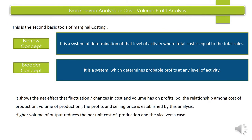Start करते हैं break-even analysis और cost volume profit analysis से। यह दोनों terms interchangeably use की जाती हैं। Break-even analysis और CVP analysis जो है वो second basic tool है marginal costing का — first basic tool हमने Part 1 में किया था, that is contribution analysis। Narrow sense में इनका मतलब है: यह एक system है जहाँ determine होता है वो level of activity जहाँ पर total cost equals total sales — that means कोई भी profit नहीं, कोई भी loss नहीं।